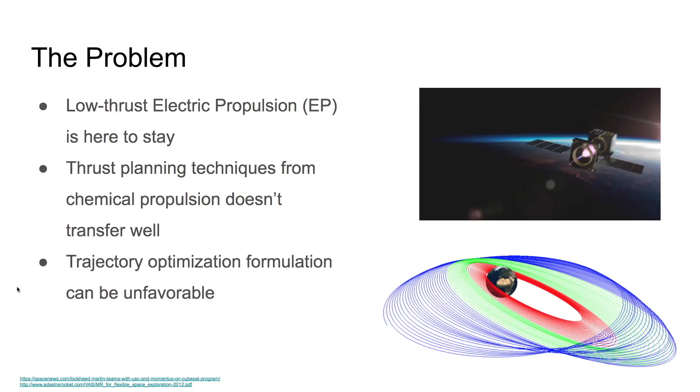Low thrust electric propulsion is one of the key enabling technologies for modern low-cost spacecraft. Unfortunately, many of the thrust planning techniques used for chemical propulsion do not transfer well to low thrust electric propulsion. These problems can be formulated as trajectory optimization problems, but they are normally large and difficult to solve.